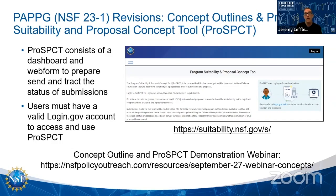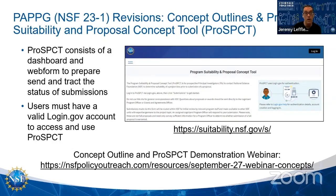You might see concept outline requirements in a funding opportunity's program solicitation, but you might also see it in a Dear Colleague Letter. For example, a Dear Colleague Letter might call for planning grant proposals and say you are required to use the PROSPECT tool for submission of your concept outline, or it might say the concept outline can be submitted via email. Always read carefully to determine how you should submit your concept outline.